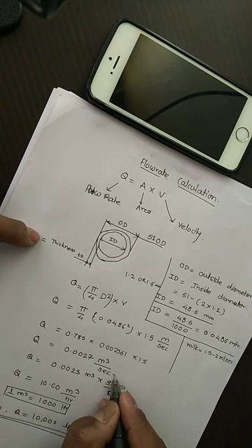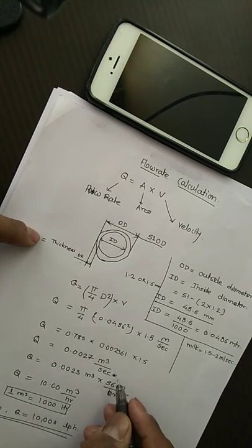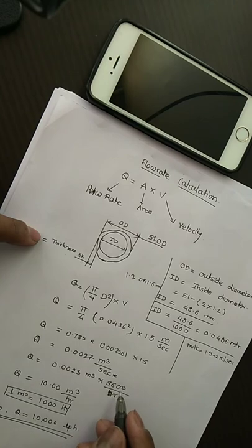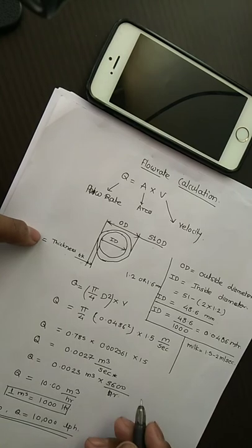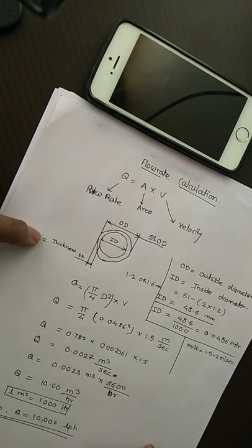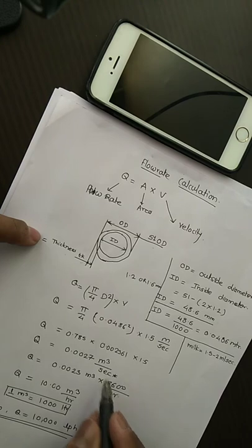But it is in seconds, so we have to convert it into hours. For conversion, we multiply by 3600, which will convert seconds into hours. When you multiply our answer with 3600...